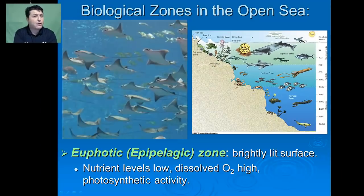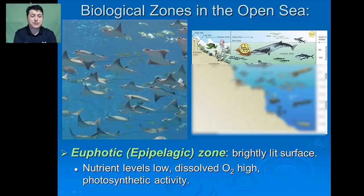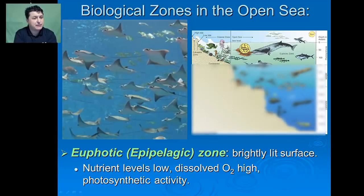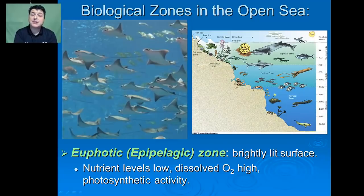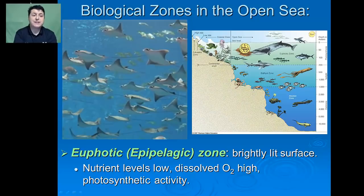The euphotic or epipelagic zone is the brightly lit surface part of the open ocean. Here, nutrient levels are typically low, but dissolved oxygen is high as a result of wave action and wind. Photosynthesis can occur here because of the presence of sunlight, with the only limitation being how many nutrients are available at a given time.